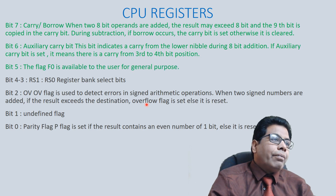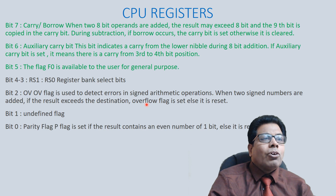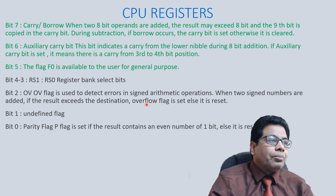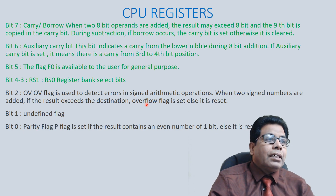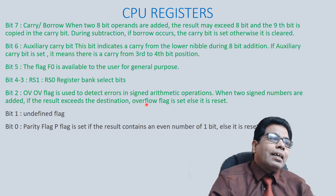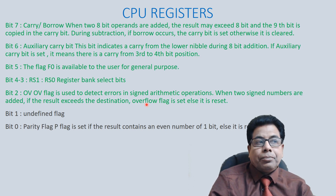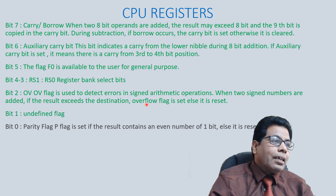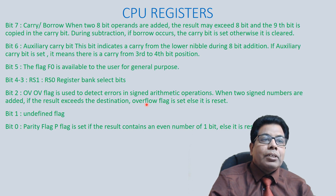Bit 5 (F0) is available to the user for general purpose — it is a user flag. Bits 4 and 3 (RS1, RS0) are the register bank select bits. Bit 2 (OV) is the overflow flag, set when two signed numbers are added and the result exceeds the range. Bit 1 is undefined. Bit 0 is the parity flag, set if the result contains an even number of ones, else reset.